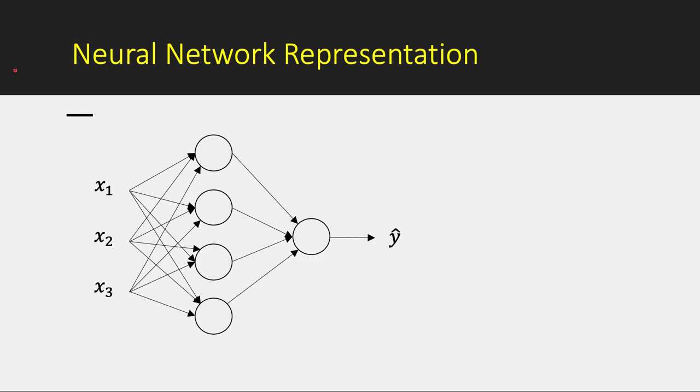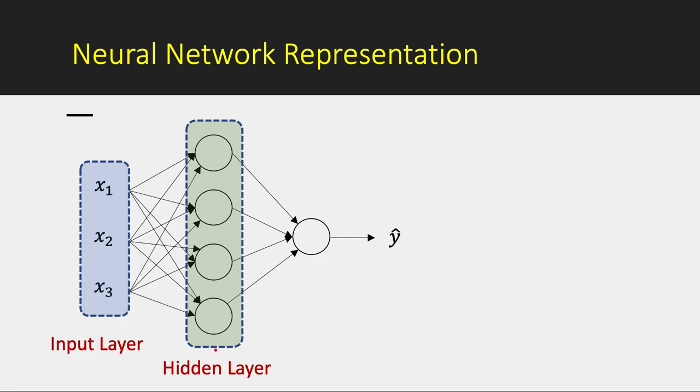So here in a neural network case we call this the input layer, and it's not a surprise since this layer contains all the input parameters and also the bias. And this second layer we call it hidden layer, and the final layer is called output layer.